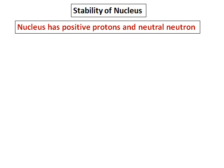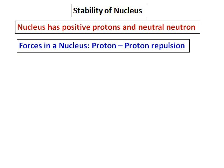Let's see how come the nucleus is stable. Nucleus has positive protons and neutral neutrons. We are familiar with this. Before we understand how the nucleus is stable, we will find out what are the forces which exist in a nucleus.